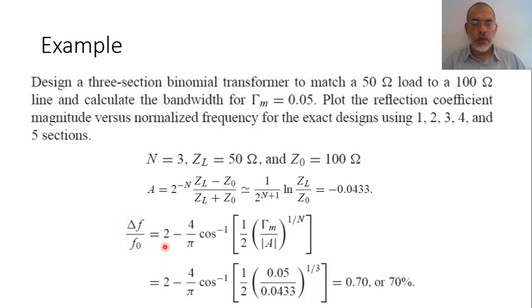The operating bandwidth delta f over f0 equals 2 minus 4 over pi cosine inverse of 1 over 2 multiplied by the maximum allowable reflection coefficient over the magnitude of A, all to the power 1 over N. The maximum allowable reflection coefficient is 0.05, and the magnitude of A is 0.0433 to the power 1 over N where N is 3. By calculating this we can obtain that the operating bandwidth in this case is 0.7 or 70%.